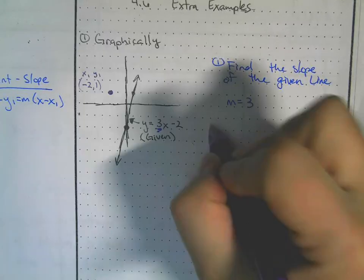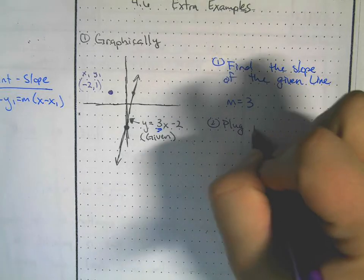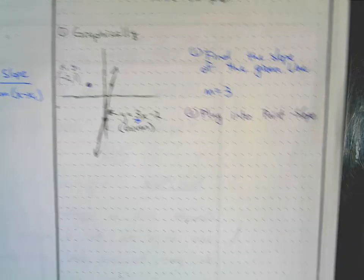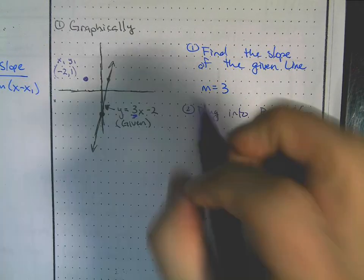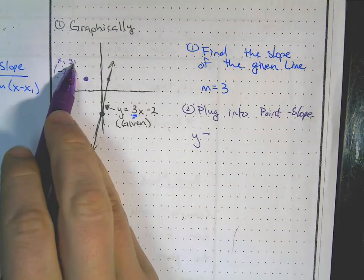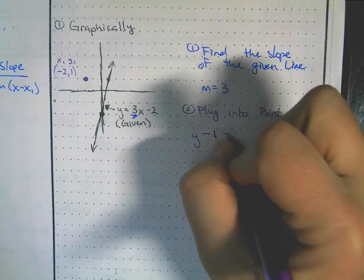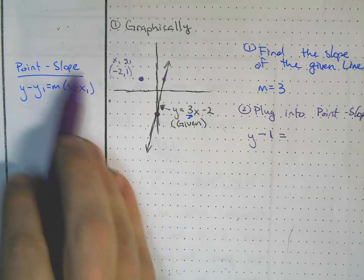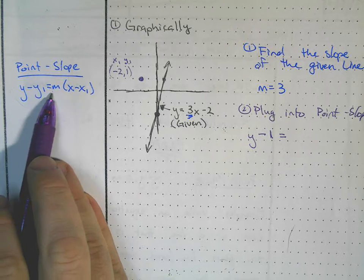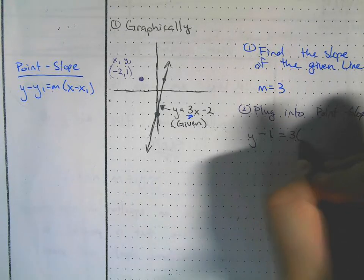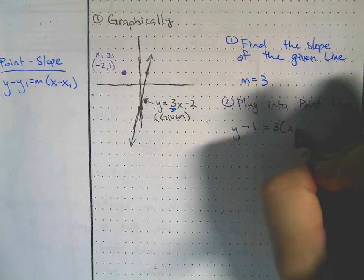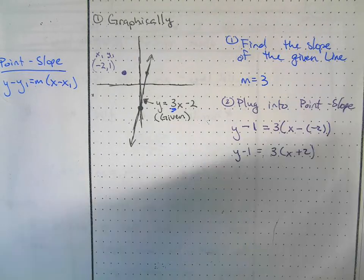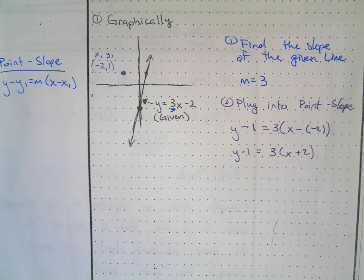Now it's time to plug everything into point-slope. So y minus y₁, which is 1, equals m, which is 3, times (x minus negative 2). When we clean that up we get y minus 1 equals 3 times (x plus 2) — the minus minus becomes a plus.